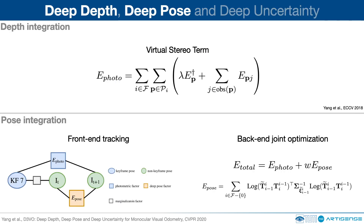The predicted depth maps are integrated by using a virtual stereo term inspired by deep virtual stereo odometry. The predicted poses are integrated into both the front-end tracking and back-end joint optimization. For the front-end tracking, we build a non-linear factor graph for direct image alignment. For the back-end optimization, we add a pose-prior term in addition to the photometric term. The total energy is then minimized with the Gauss-Newton method. Please refer to our paper for more technical details.